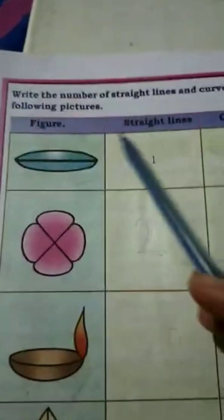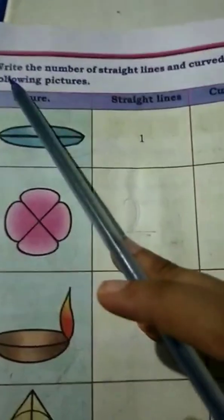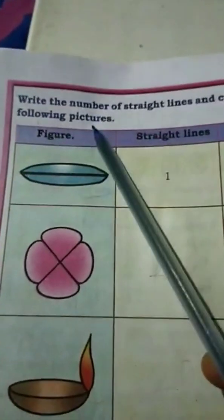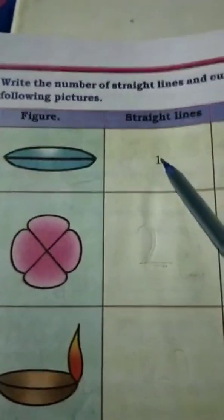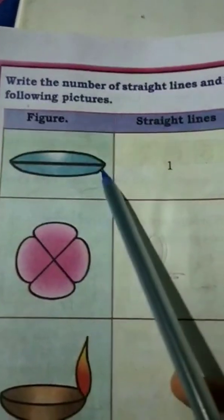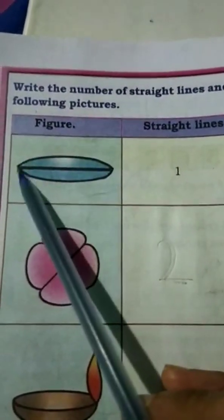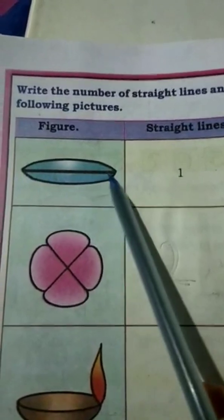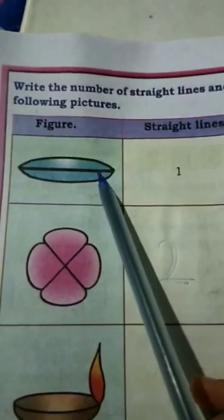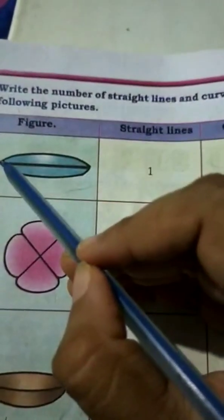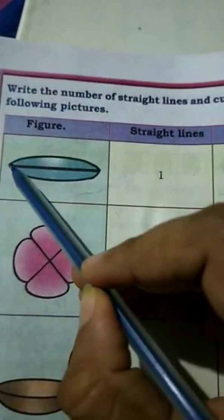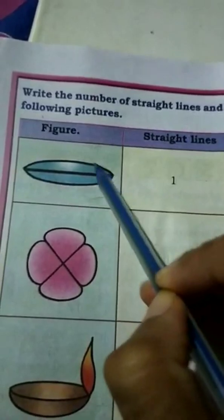Here is a homework problem. Write the number of straight lines and curved lines in the following pictures. A straight line is where two points meet — you can draw it with a ruler or freehand. In the first picture, you can see one straight line and two curved lines — it looks similar to the letter C.